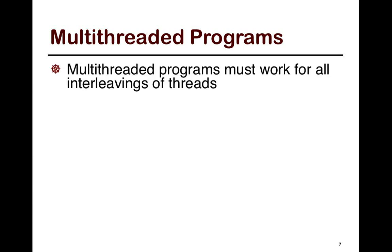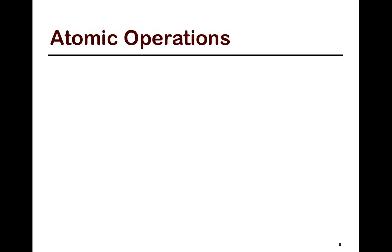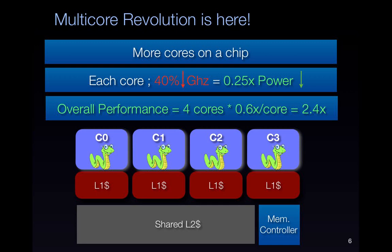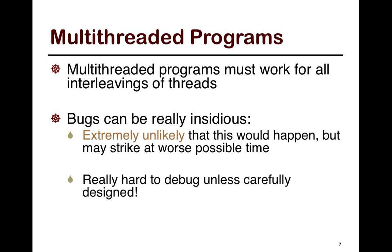Let's take a look at multi-threaded programs and what is hard about them. The hard part about multi-threaded programs is that they must work for all interleavings of threads. In parallel programs, each thread runs asynchronously — they do not coordinate with each other, which means the actions in each thread could be happening in any order, all at the same time, or A before B or B before A. Without synchronization, you have no control over this order.